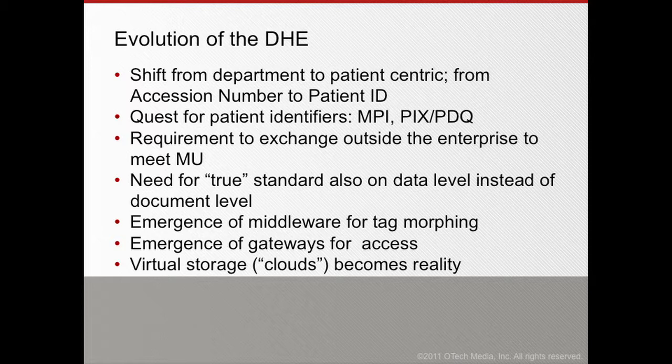For example, within a department we might have a requisition number or accession number that was often used to retrieve information. That's no longer sufficient. We now need patient IDs, and with that comes a quest for patient identifiers that are unique. So we need MPI — Master Patient Indexes — and we also need to ensure we have a global identifier.